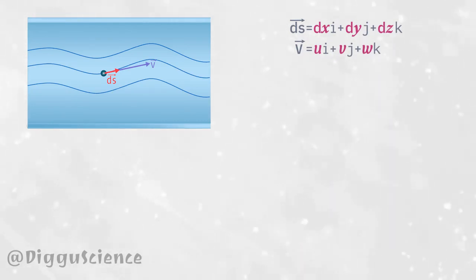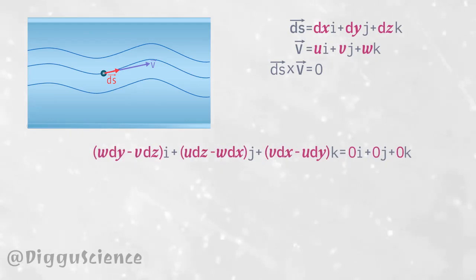Because vector ds and vector V are in the same direction, vector ds cross vector V is zero. Using the concept of cross product, we will produce an equation like this.